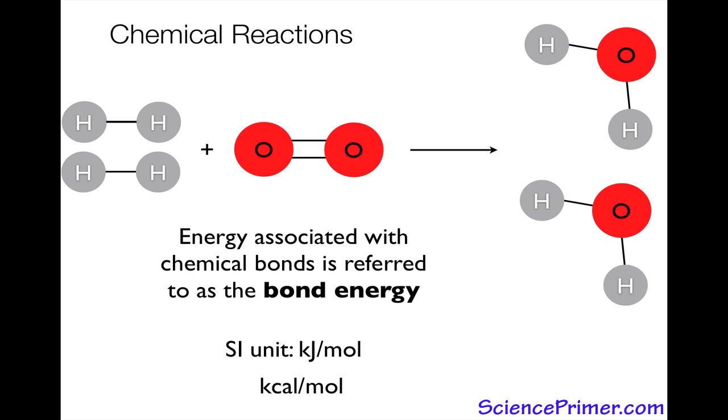Start with the hydrogen-hydrogen single bond, which has 103 kilocalories associated with it. The oxygen-oxygen double bond has 116 kilocalories. And the only bond in the products is an oxygen-hydrogen single bond, and those have 110 kilocalories associated with them.